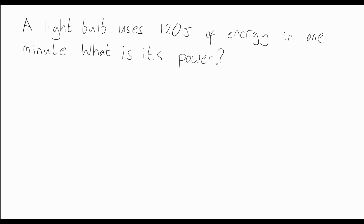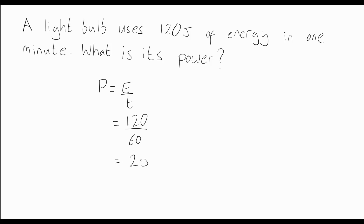Let's try a simple question: a light bulb uses 120 joules of energy in one minute. What is its power? We start by writing the equation: power equals energy divided by time. The energy is 120 joules. The time was one minute, but we don't use minutes — we use seconds, so we convert that to 60 seconds. That gives us 120 divided by 60, which equals 2 joules per second. So the power of that light bulb was 2 joules per second, which we abbreviate to 2 watts.